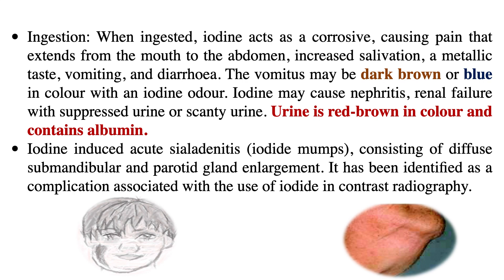Iodine may cause nephritis and renal failure with suppressed or scanty urine. The urine is red-brown in color and contains albumin. Iodine-induced acute sialadenitis, also called iodide mumps, consists of diffuse submandibular and parotid gland enlargement, identified as a complication associated with use of iodide in contrast radiography.